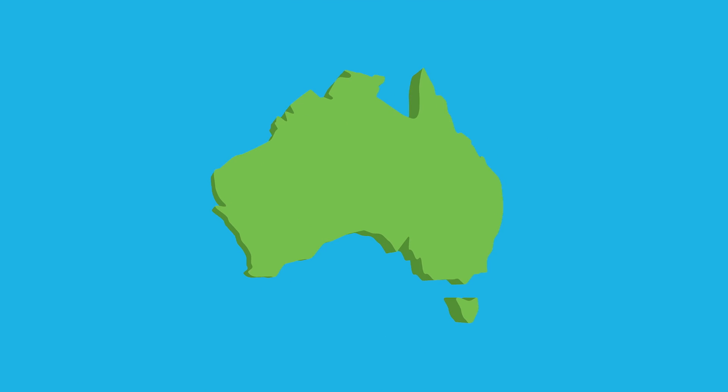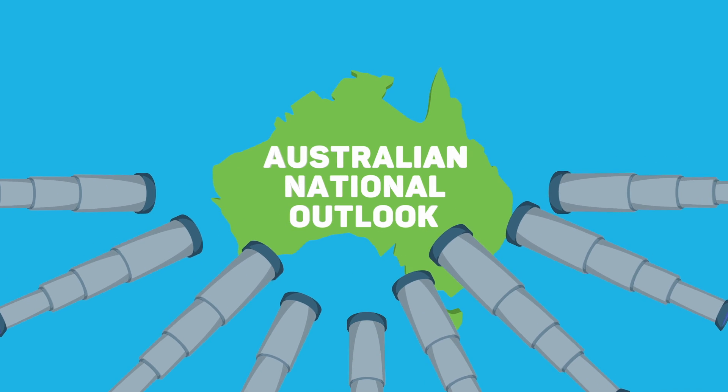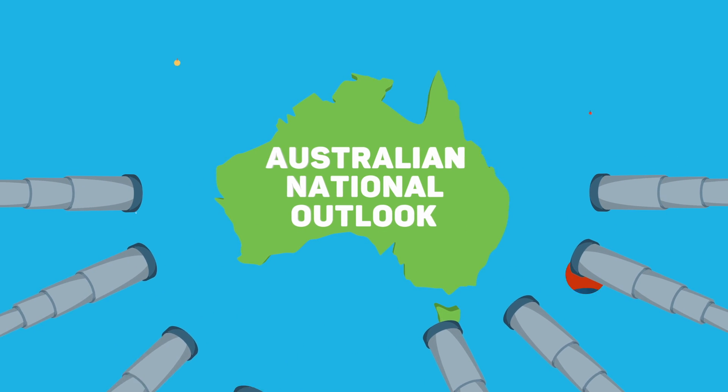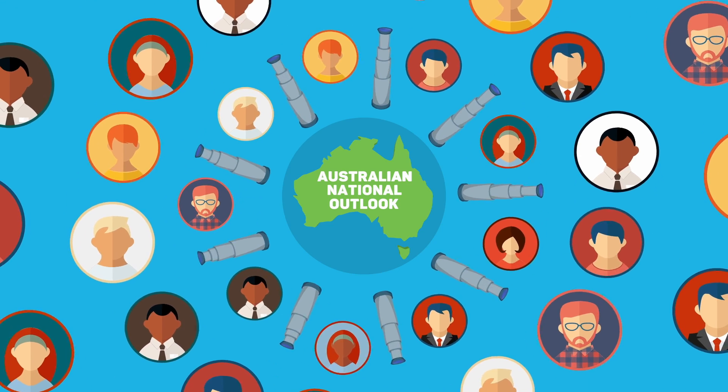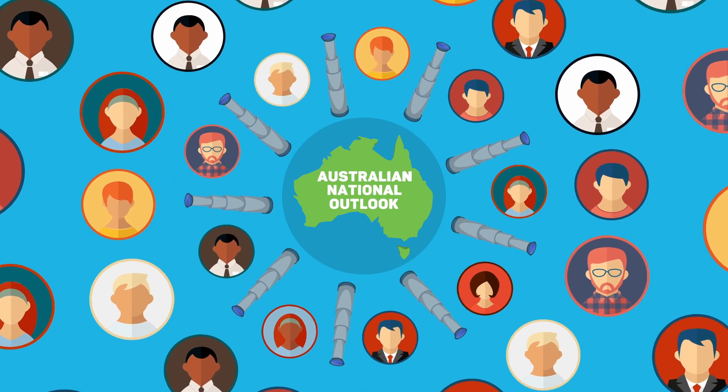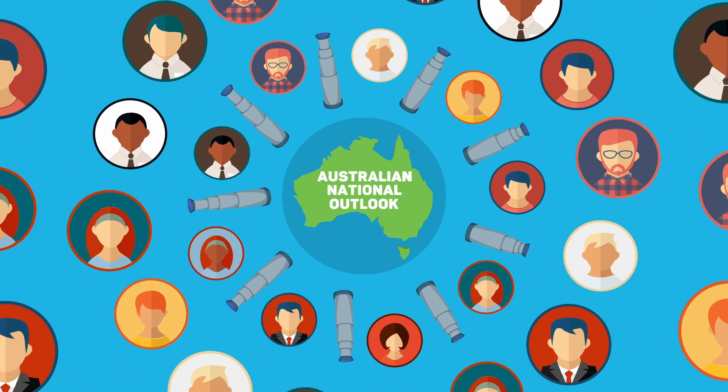This is why the Australian National Outlook applies not one but nine of the world's leading economic and environmental models. It employs the expertise and insight of over 40 scientific researchers with a wealth of international research to create a detailed, integrated, evidence-based map of Australia's possible futures.